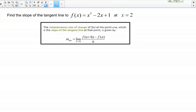Let's practice finding the slope of the tangent line. The directions here say to find the slope of the tangent line to f(x) = x³ - 2x + 1 at the point x = 2. I've pasted down below the formula for the slope of the tangent line so that we have that to reference.